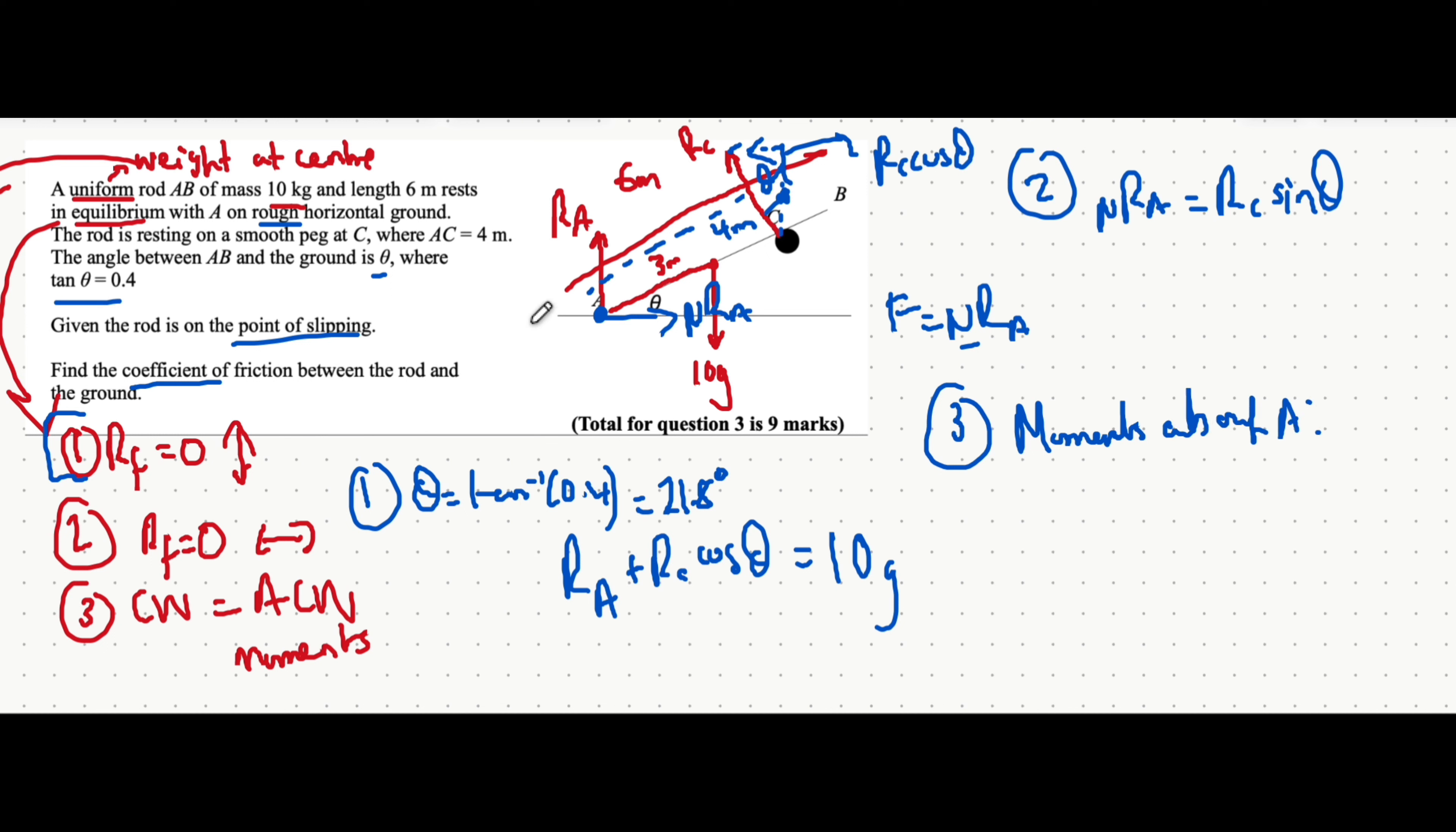One thing you have to be careful of is that the force has to be perpendicular to the rod. So you can say that reaction force at C multiplied by the distance of that reaction force from the pivot, which is four meters. And because it's perpendicular to the surface, that's fine to take it.